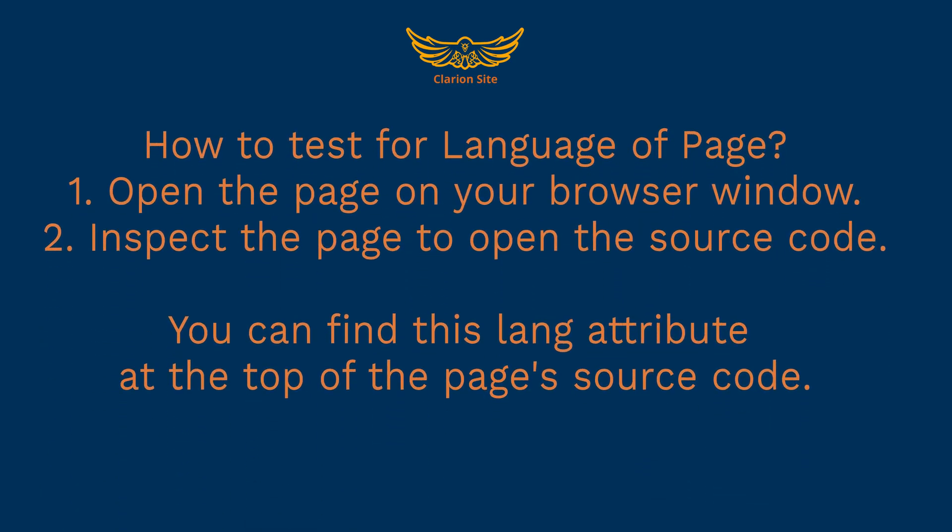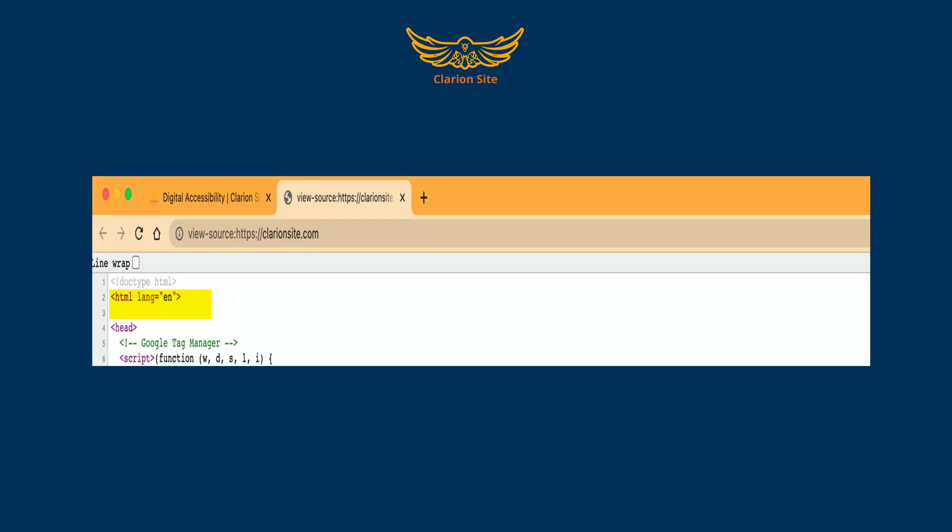How to test for language of page. Number 1: open the page in your browser window. Number 2: inspect the page to open the source code. You can find the lang attribute at the top of the page's source code. This screenshot shows the lang attribute in the page's source code.